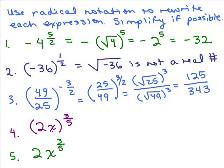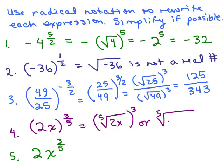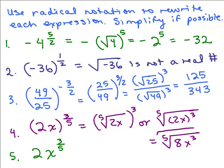Next: 2x to the 3 fifths power. The base is 2x. There are a couple ways to write this: you could write it as the fifth root of 2x cubed, or you could write the fifth root of 2x cubed and simplify inside the radical — that would be the fifth root of 8x cubed, since 2x times 2x times 2x is 8x cubed. I think the fifth root of 8x cubed looks more simplified.